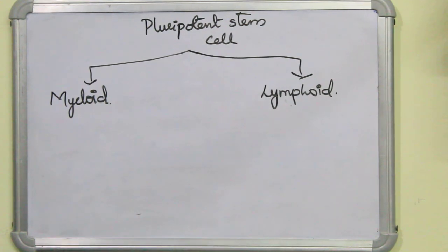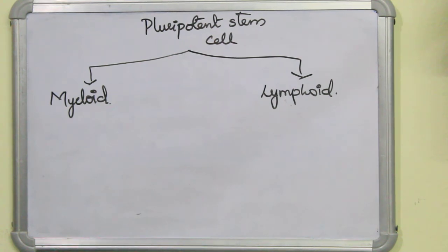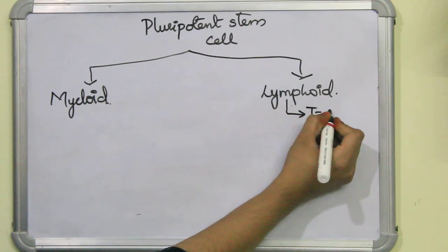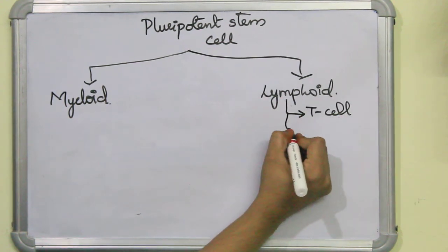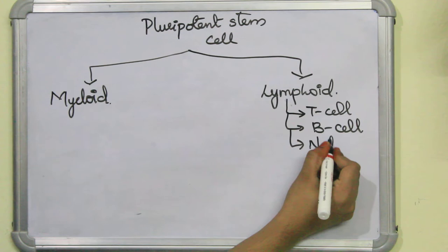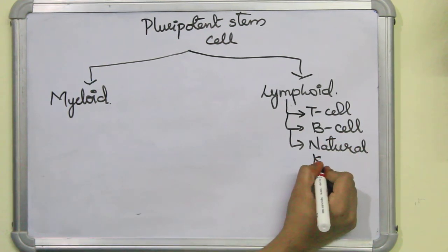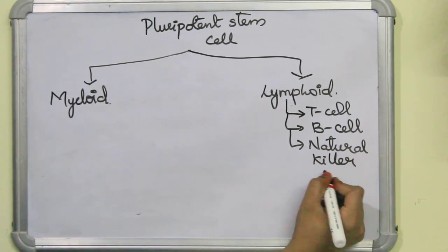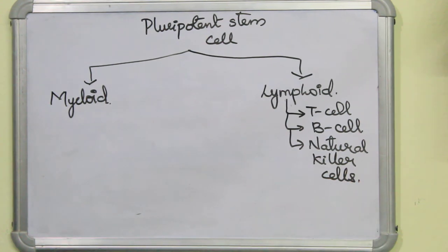The term lymphoid itself refers to the lymphatic system. The cells responsible for immunity come under the lymphoid lineage. These cells are: T cells, B cells, and natural killer cells. So there are three cell types under the lymphoid lineage.